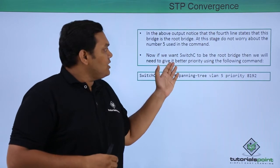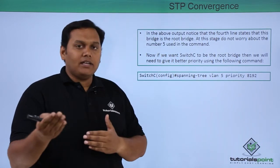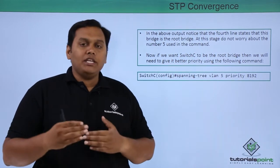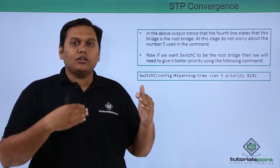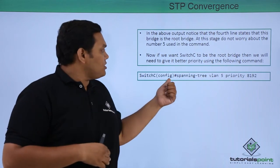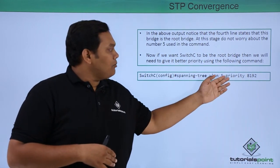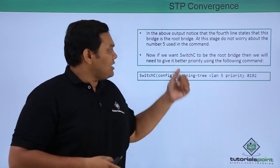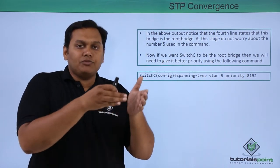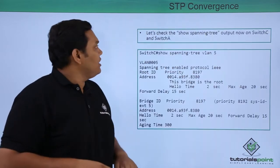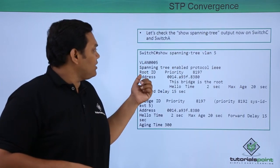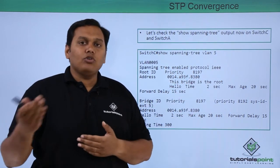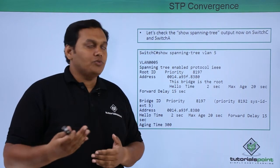If we want to change the spanning tree root bridge from Switch A to Switch C, we use the command 'spanning-tree VLAN 5 priority 8192', setting Switch C's priority to 8192. This automatically changes the root bridge from Switch A to Switch C. The output confirms the root ID changes to 8197, indicating the root bridge has switched to Switch C.